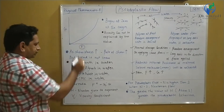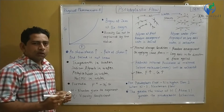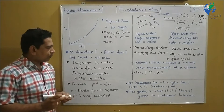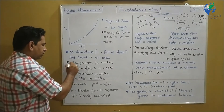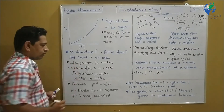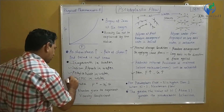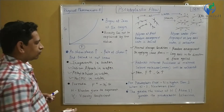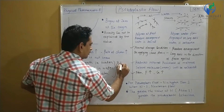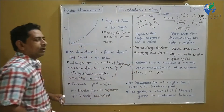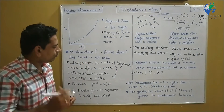The substances which follow the Pseudoplastic flow are: Tragacanth in water, sodium alginate in water, methylcellulose in water, and sodium carboxymethylcellulose in water. All of these are polymers. Generally, such type of flow pattern is observed in the case of polymers.